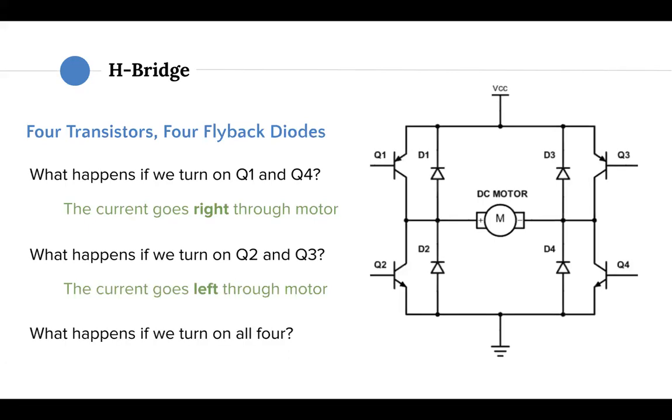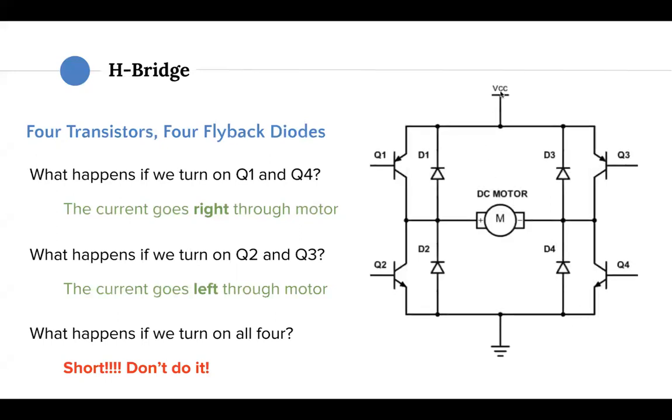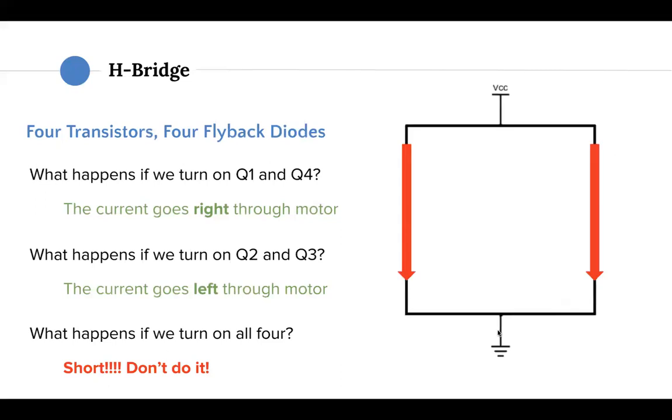And what happens if we turn on all four? Well, that's really bad. We don't want to do that. But why? Because it causes a short. When Q1, Q2, Q3, and Q4 are all on, all the bases will have a high value or high reading. That's allowing current to pass through from the collectors to their emitters, allowing for a short circuit right here and a short circuit right here, as shown in this animation diagram.